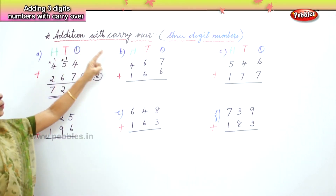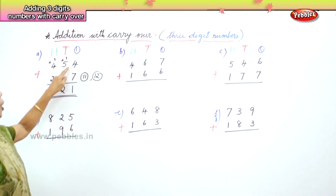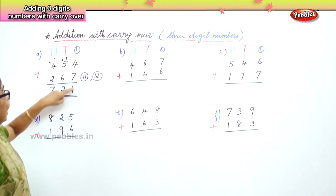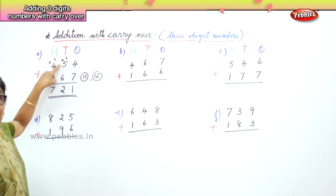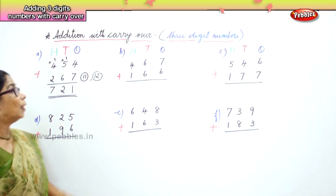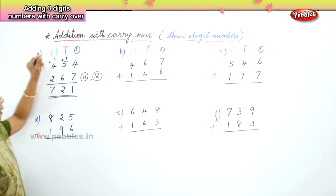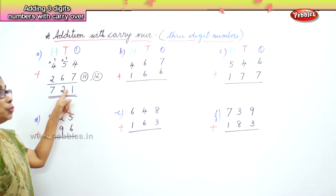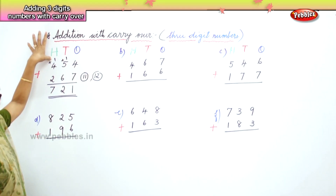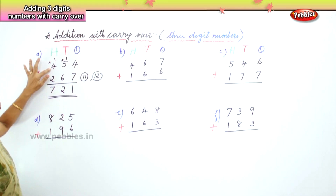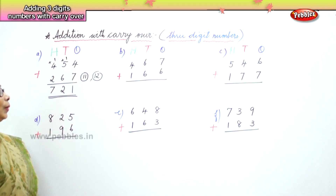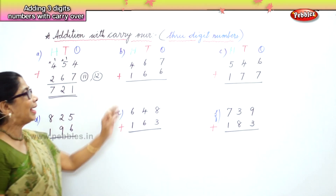Let's look at it once again. 4 ones plus 7 ones make 11 ones — that is 1 ten carry over to the tens place and 1 one. In the tens place: 6 tens plus 5 tens plus 1 carried ten is 12 tens. 12 tens gives 2 tens and 1 hundred carried over. 400 plus 200 plus 100 is 700. So the answer is 721.